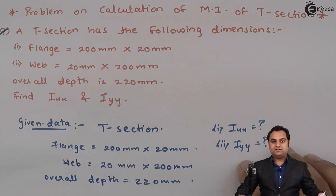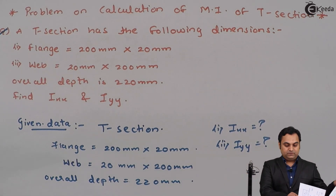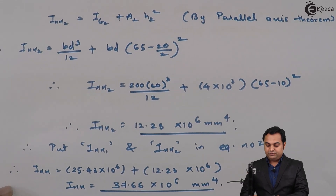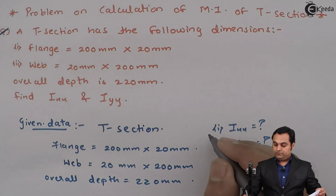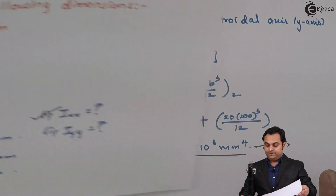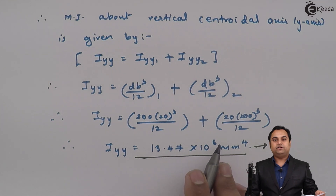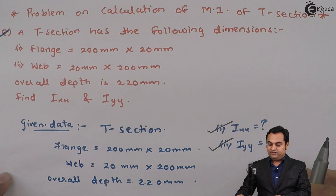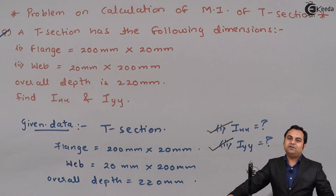To summarize, there were two things asked: Ixx = 37.66 × 10⁶ mm⁴ and Iyy = 13.47 × 10⁶ mm⁴. Both answers have been calculated and the problem is now complete.